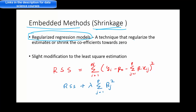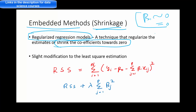Regularization is a technique that regularizes the estimates or shrinks the coefficients to 0. You have beta coefficients, and these beta coefficients will be very close to 0 or either equal to 0 sometimes. Whenever a coefficient is equal to 0, that variable is as good as not present in the model — it is considered to not be part of the model.